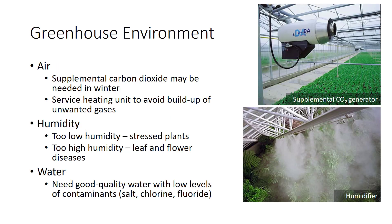In addition to maintaining the proper temperature and light levels, the atmospheric composition of the greenhouse must also be controlled. In a well-ventilated greenhouse, the addition of supplemental carbon dioxide is typically unnecessary. However, during the heating season when greenhouse vents are typically kept closed, carbon dioxide levels may become limiting, which makes it important to add supplemental carbon dioxide.